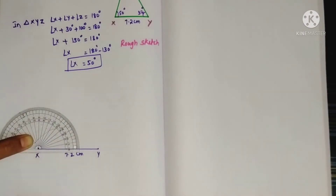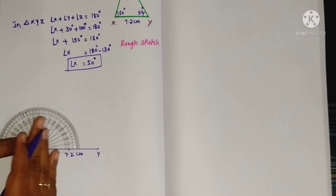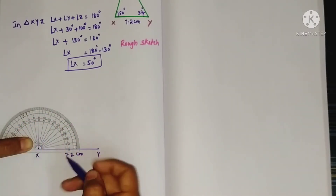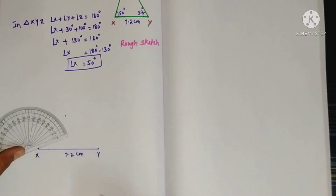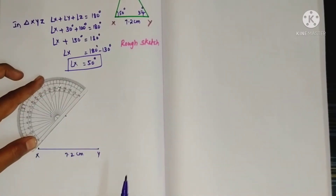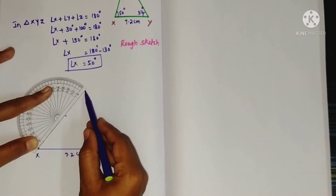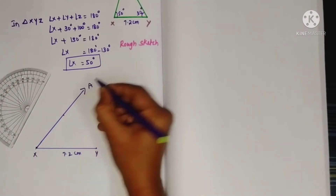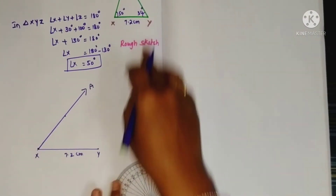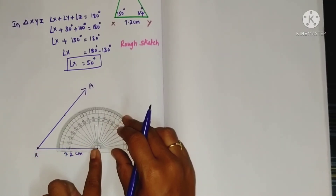Take the protractor. Angle X is 50 degrees, so place it at X. The angle is coming in this direction, so use the down scale at 50 degrees. Place a point there and just draw a ray through this point. Now for angle Y, angle Y equals 30 degrees.